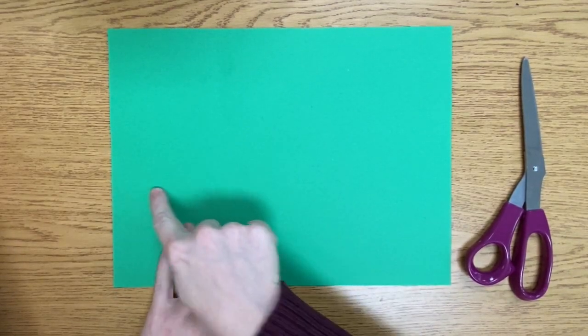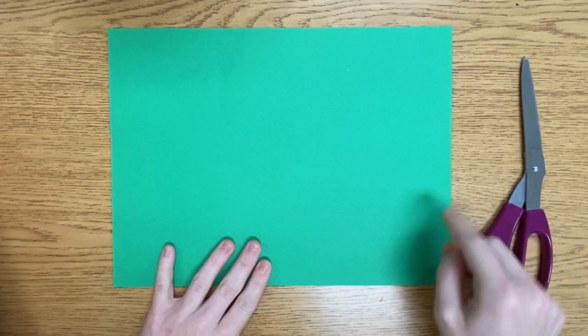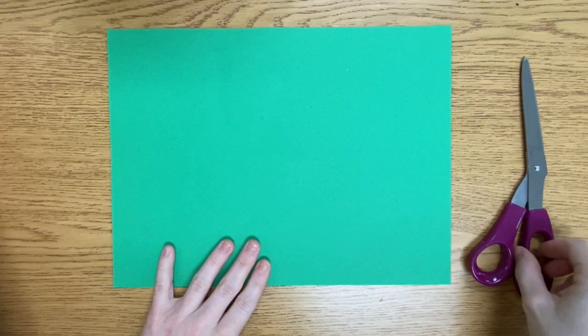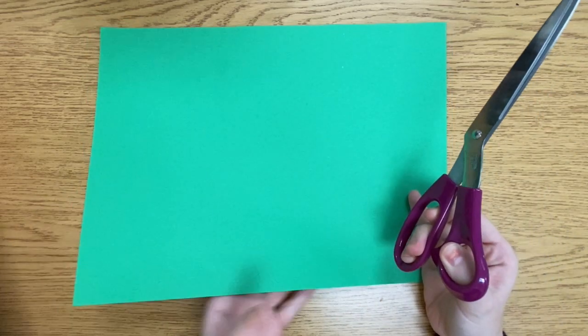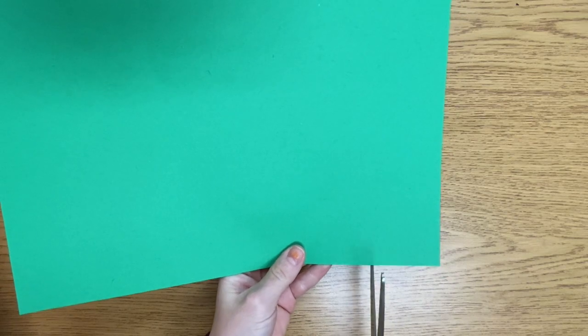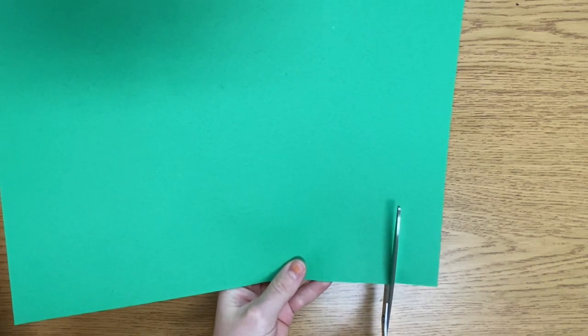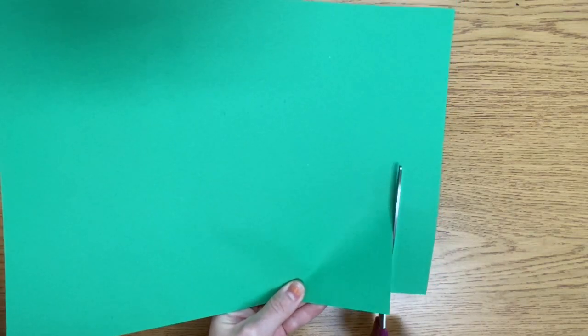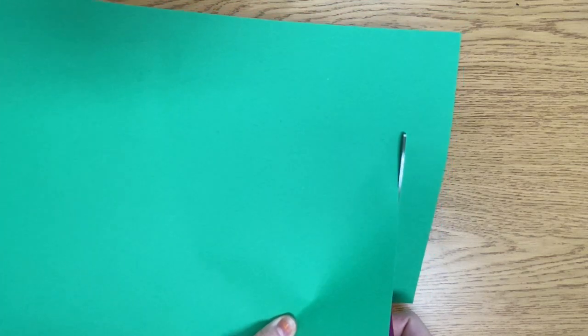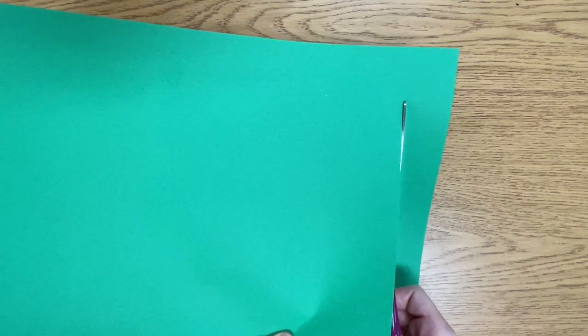So I'm going to start with my green paper first and have it facing horizontally. This is going to be my grass. I'm going to take my scissors and starting at one end, I'm going to cut a thin strip, maybe about an inch thick. And I'm going to leave a gap at the end, about an inch thick as well.